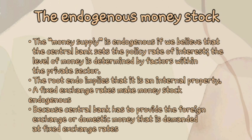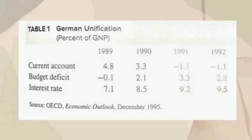In this chapter, the essential point is that the commitment to maintain a fixed exchange rate makes the money stock endogenous, because the central bank has to provide the foreign exchange or domestic money that is demanded at the fixed exchange rate. Thus, even when capital mobility is less than perfect, the central bank has only limited ability to change the money supply without worrying about maintaining the exchange rate. This table shows the effects of fiscal expansion set off by German unification and the consequences for Germany's neighbors whose exchange rates were fixed against the Deutsche Mark.